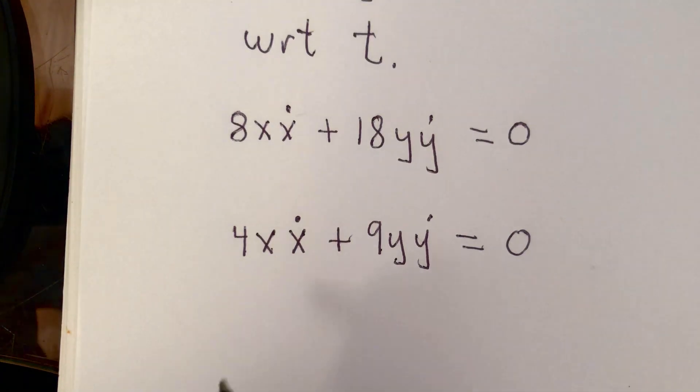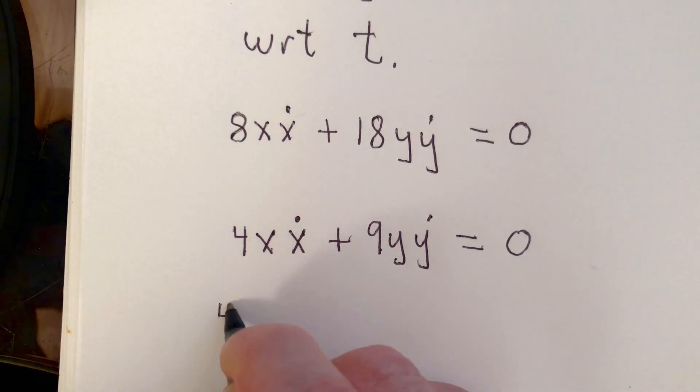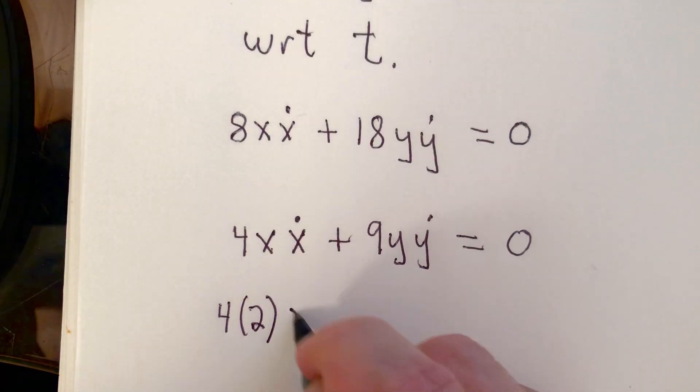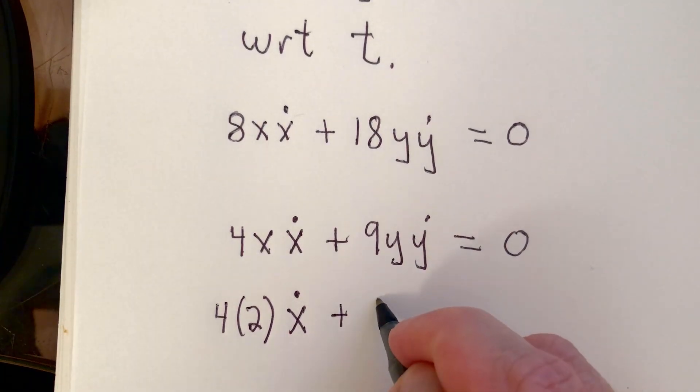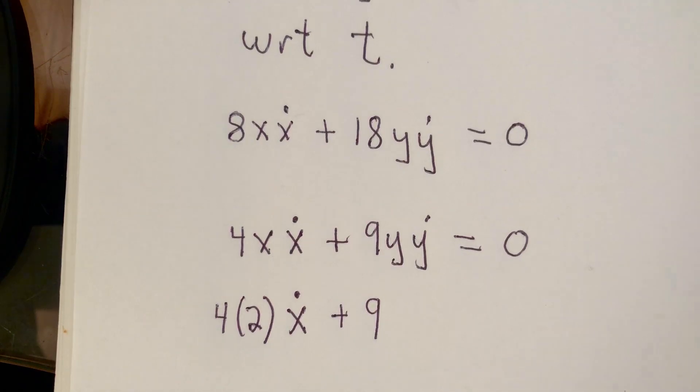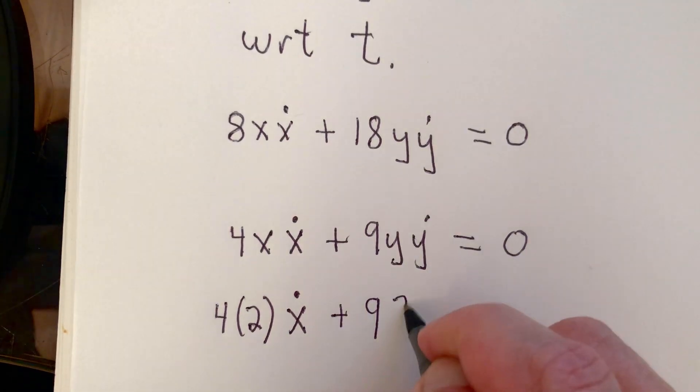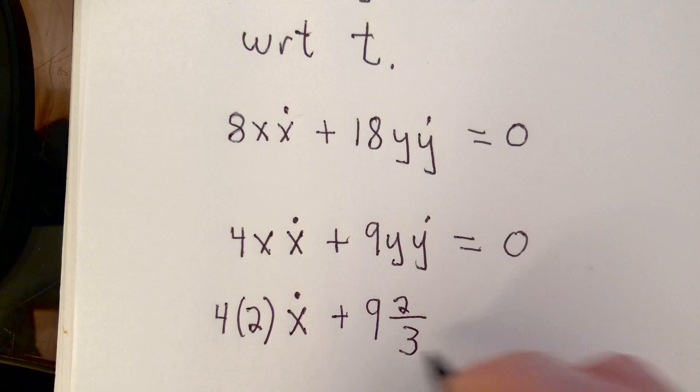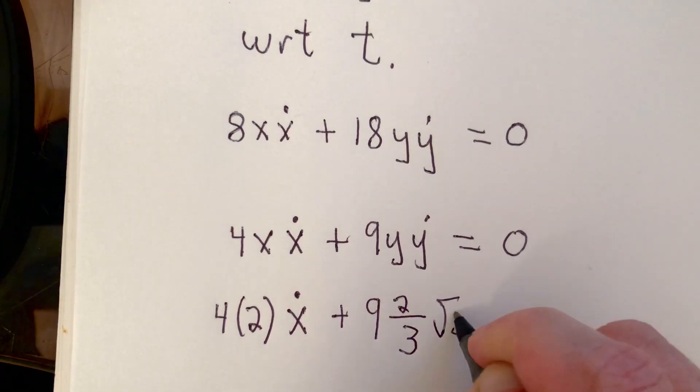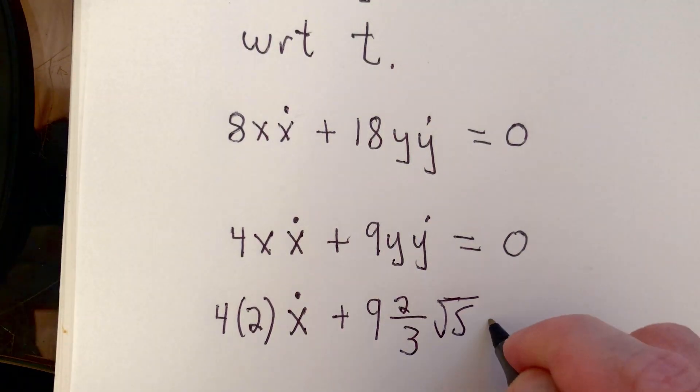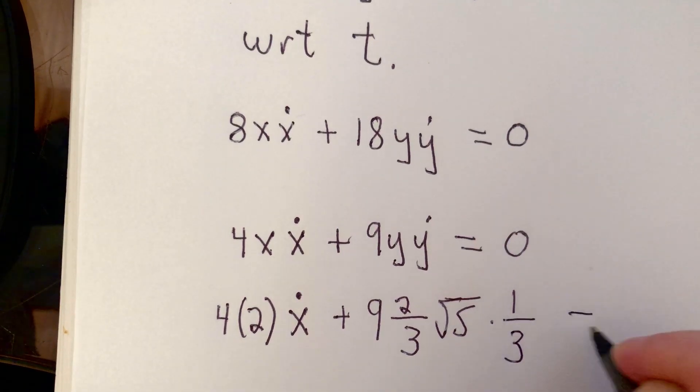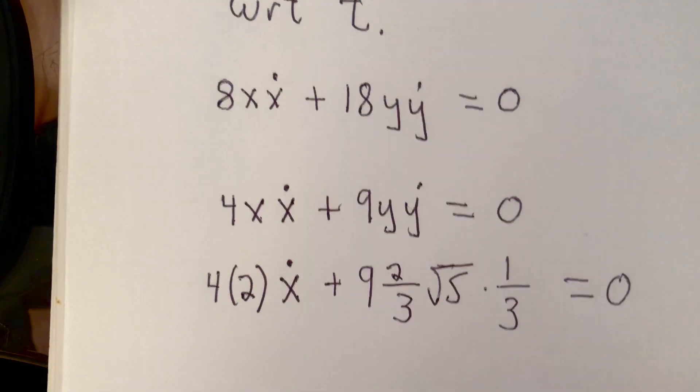So remember, x is 2. So we have 4 times 2 times x dot, which is what we're asked to find, plus 9 times y. Remember, y is 2 thirds times the square root of 5. And then y dot, or dy dt, was given to be 1 third.